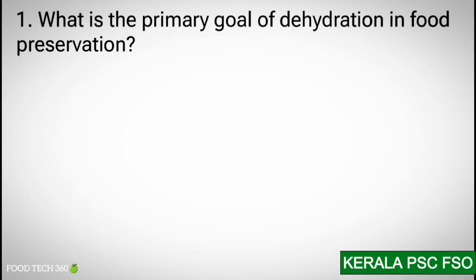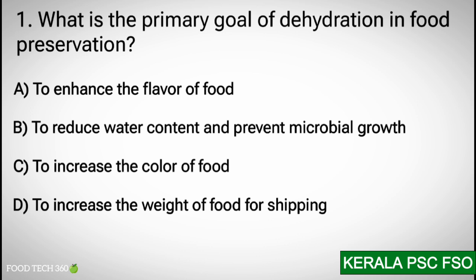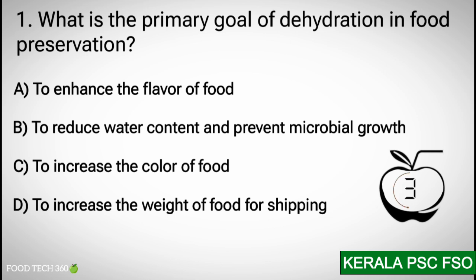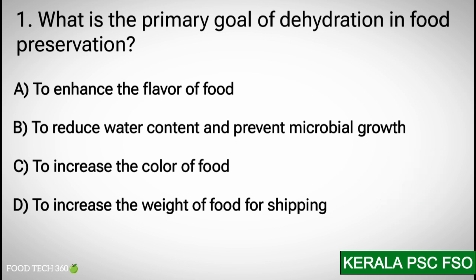Q1: What is the primary goal of dehydration in food preservation? Options: A. To enhance the flavor of food. B. To reduce water content and prevent microbial growth. C. To increase the color of food. D. To increase the weight of the food for shipping. Correct answer: B. To reduce water content and prevent microbial growth.